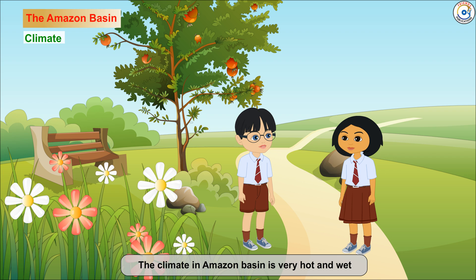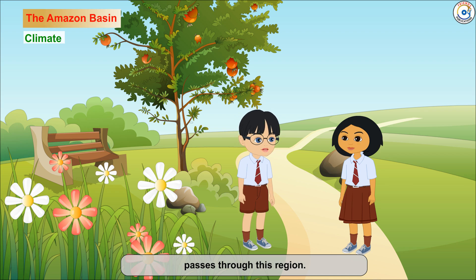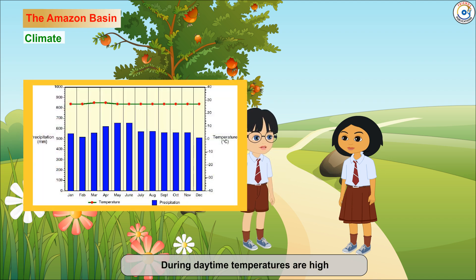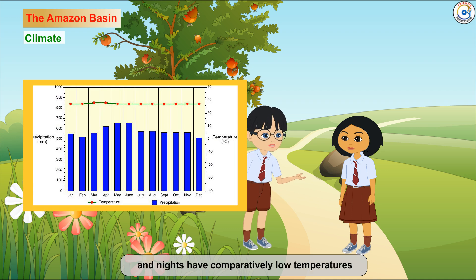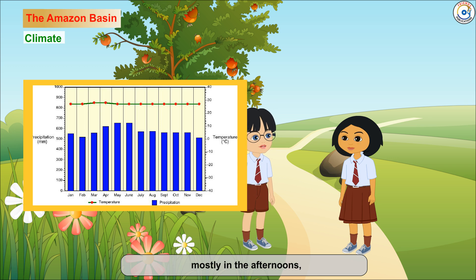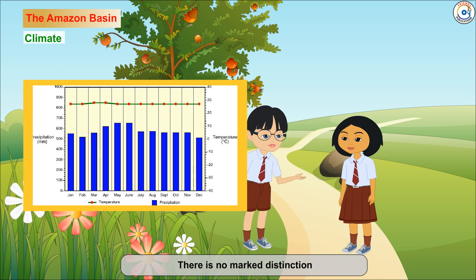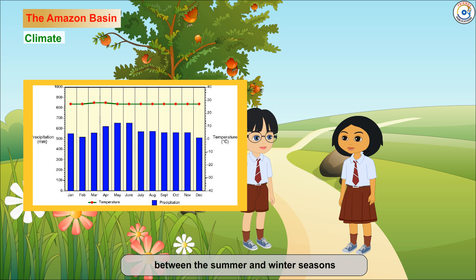The climate in the Amazon Basin is very hot and wet throughout the year, since the equator passes through this region. Days and nights are hot and humid with evenly high temperatures. During daytime, temperatures are high with high moisture content, and nights have comparatively low temperatures but humidity remains high. This region experiences heavy rainfall up to 250 cm per year, mostly in the afternoons accompanied by lightning and thunder. The Amazon rainforest climate has no dry season as it rains almost the whole year.